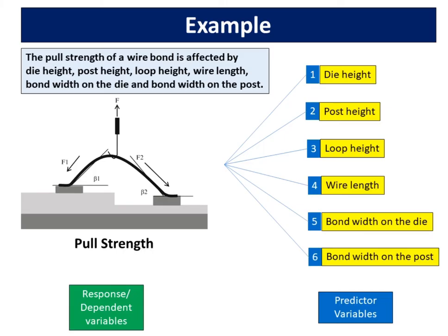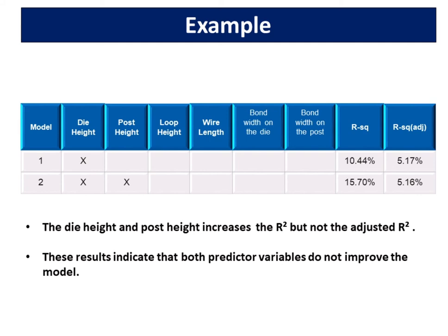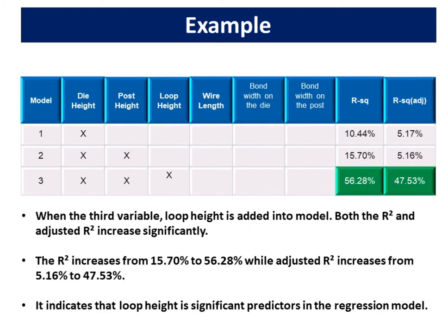Let's take a look at an example. The pull strength of a wire bond is affected by die height, post height, loop height, wire length, bond width on the die and bond width on the post. From the analysis, the die height and post height increase the R-squared but not the adjusted R-squared. These results indicate that both predictor variables do not improve the model. When the third variable, loop height, is added into the model, both the R-squared and adjusted R-squared increase significantly.